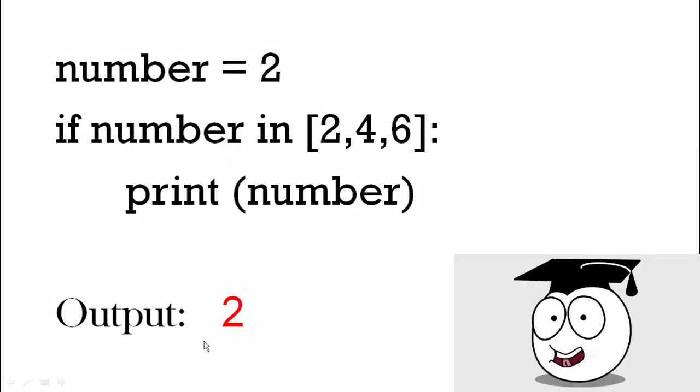Here we've got a list of three numbers: two, four, and six. If the number's two, it's going to print two. If the number's one, it's not there, so there's no output.